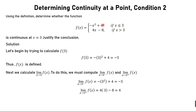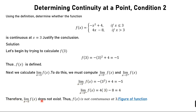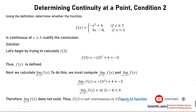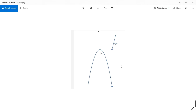When x approaches 3 from the left we use the expression for x < 3, and when x approaches 3 from the right we use the expression for x ≥ 3. The left limit gives −5 and the right limit gives 4. Since the left limit is not equal to the right limit, the limit does not exist and therefore the function is discontinuous at x = 3. We can also verify this from the graph of the function, which shows a discontinuity.